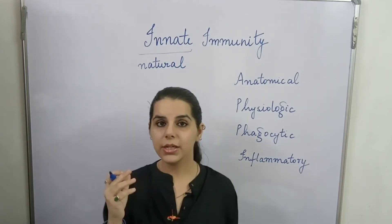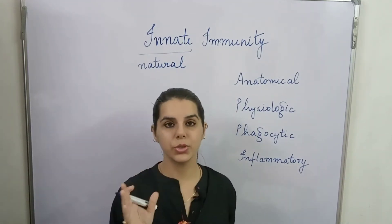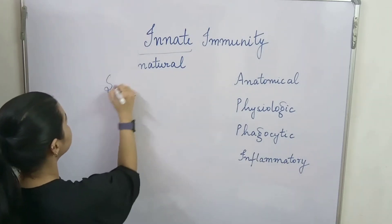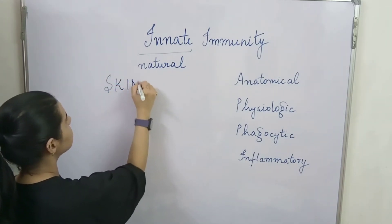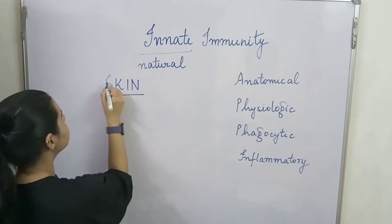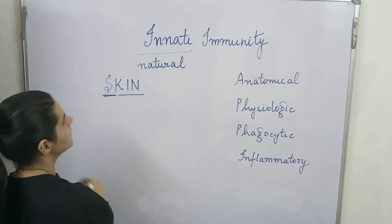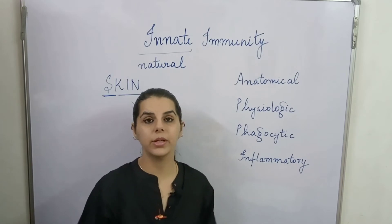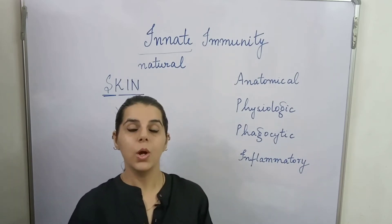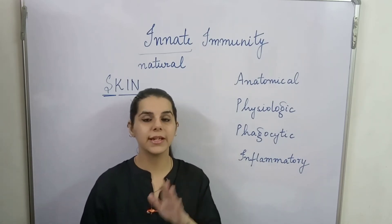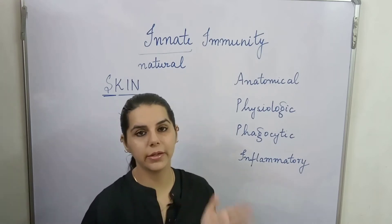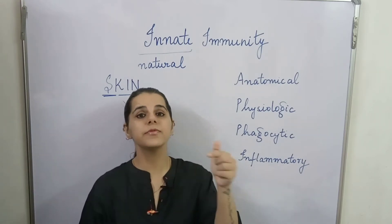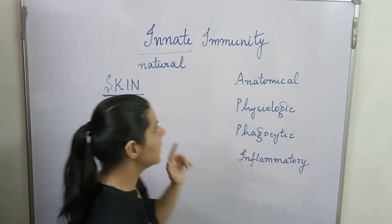The anatomical barrier refers to the structural parts of the body. In the anatomical barrier, the first component we have is skin. Skin is the very first organ, present everywhere on our body, and it is the first line of defense.